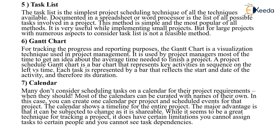The Task List is the simplest project scheduling technique of all the techniques available. Documented in a spreadsheet or word processor, it is the list of all possible tasks involved in the project. This method is simple and the most popular of all methods. It is very useful while implementing small projects, but for large projects with numerous aspects to consider, task lists are not a feasible method.